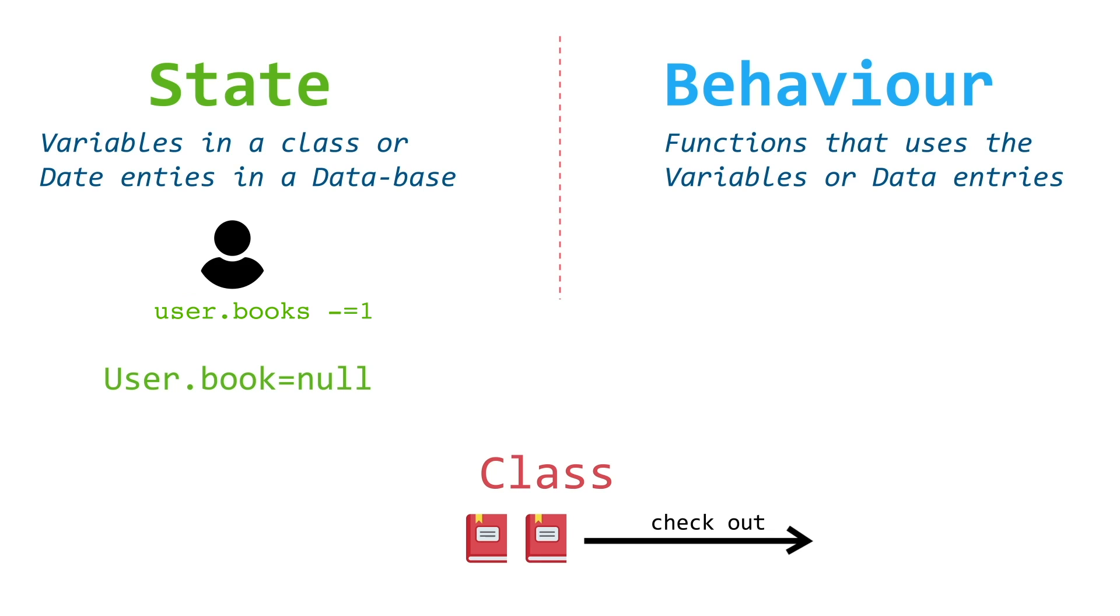This would be the state and the behavior would be user.returnbook. This would be the function that you have. So this function would actually do this to the state. That's the basic idea of state and behavior.